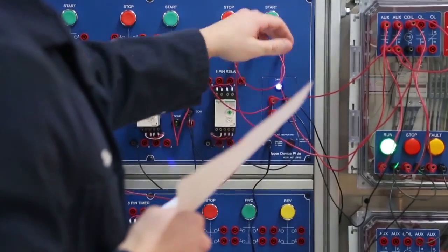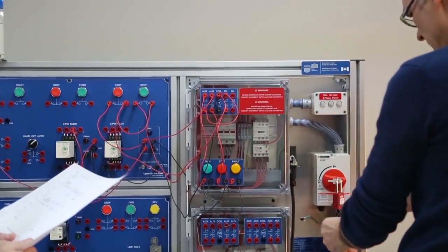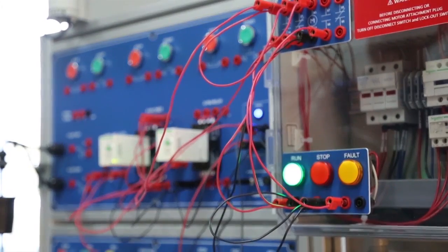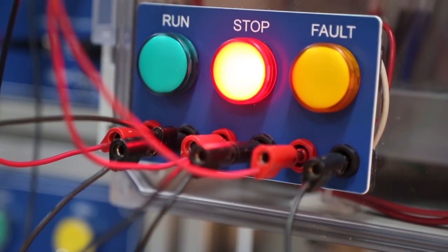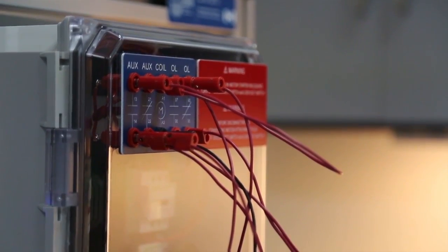The trainer utilizes a separate class 2 control supply section and three phase across the line reversing and non-reversing starters. The starters are housed in enclosures with viewing windows.